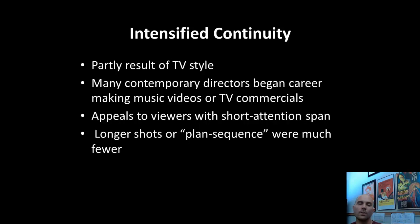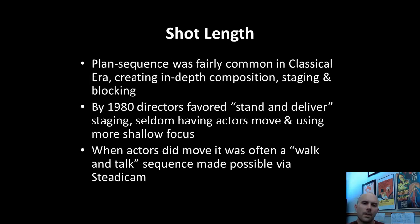Longer shots are what was called the planned sequence. The planned sequence was the foundation in classical Hollywood cinema post-Citizen Kane — films tended to be built around at least a few planned sequences with a very long, intricately planned out shot. These have become much fewer in today's filmmaking. The planned sequence was fairly common in the classical era post-Citizen Kane; it involves creating an in-depth composition with foregrounded and backgrounded space, very intricate staging and blocking, and a very well-constructed camera movement. By roughly 1980, directors favor more of a stand-and-deliver method where actors stand and deliver their lines, move about less, and more shallow focus tends to be used.